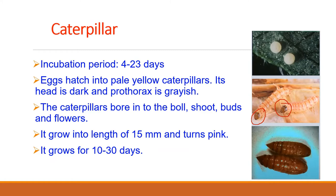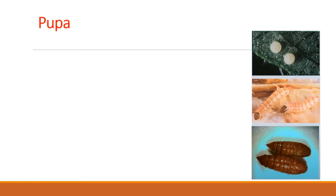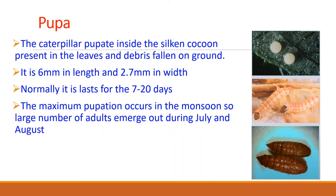As the larvae grow older, they develop a pinkish hue, giving them the name pink boll worm. Newly emerged caterpillars bore through the bolls and seeds, feeding on tissue inside flowering buds and young bolls. The mature larvae are 10 to 12 mm long, red-pinkish, with a double red band on the upper portion of each segment. They go through 5 molts and take 10 to 30 days to become fully mature. When mature, the larvae come out of the boll, fall on the ground, and pupate in a silken cocoon in the soil under fallen leaves.